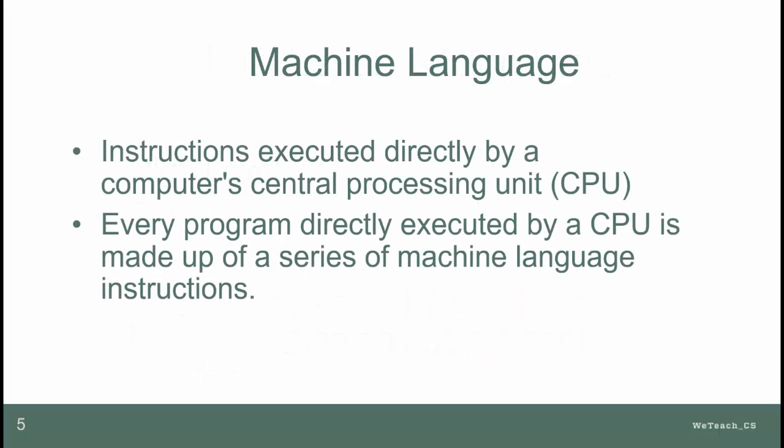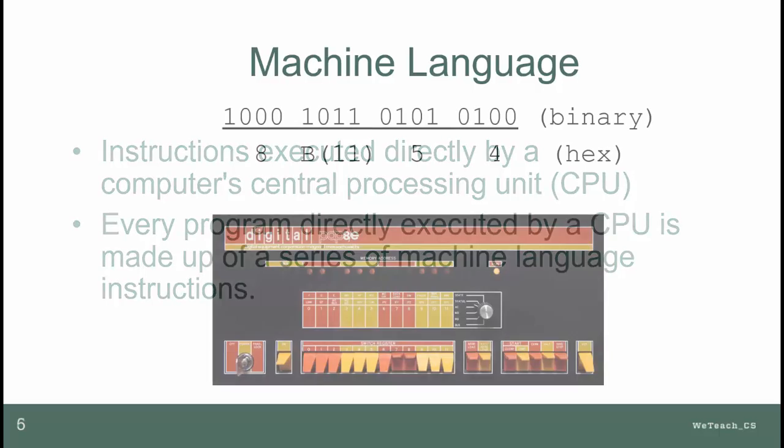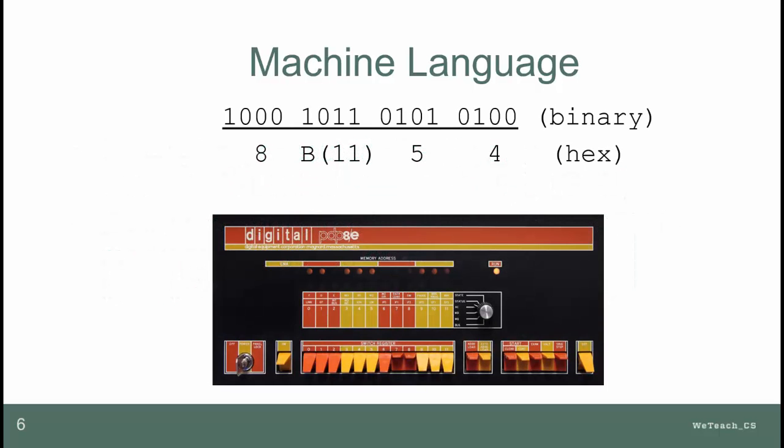Machine code was the original low-level language. When the programmer would stand in front of a very large computer, consisting of rows and rows of switches that controlled electronic signals and circuits, flipping the switches on or off according to the program being set up — a very tedious process, indeed.